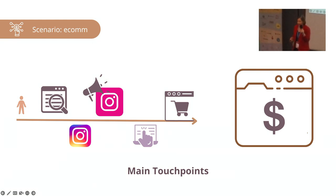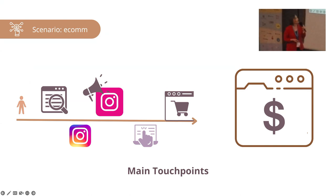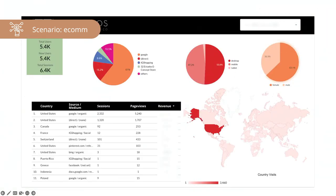How do customers arrive at this website? They do a good job with SEO — they write blog posts, product descriptions — so people find them through organic search. They are also present on Instagram, run some ads on Instagram, and have a newsletter. Now let's look at one of the pages of a Looker Studio dashboard I created for her. I'm going to highlight a few key things from the data.